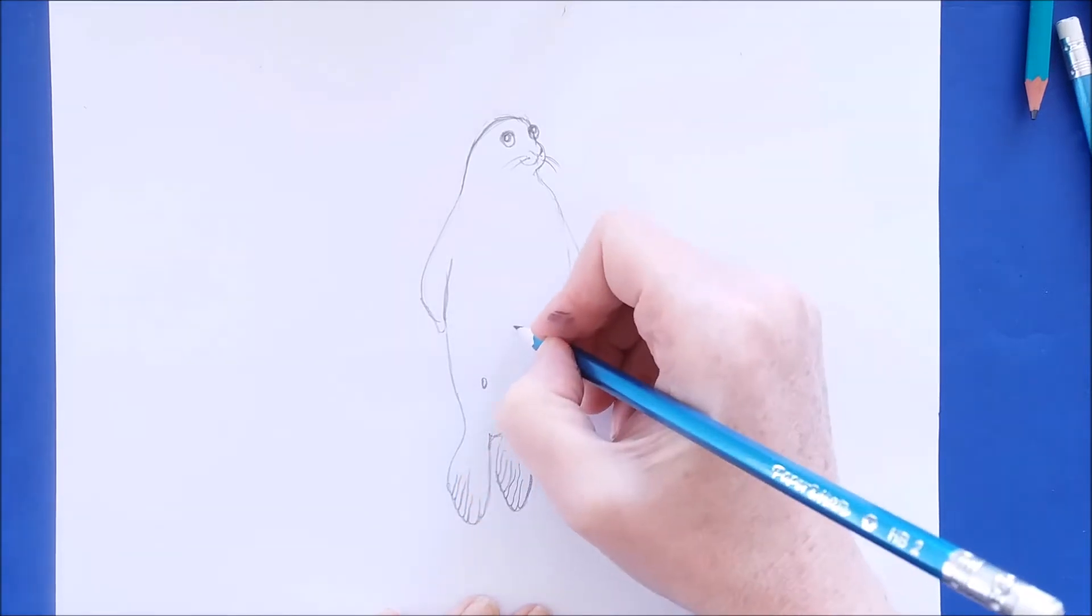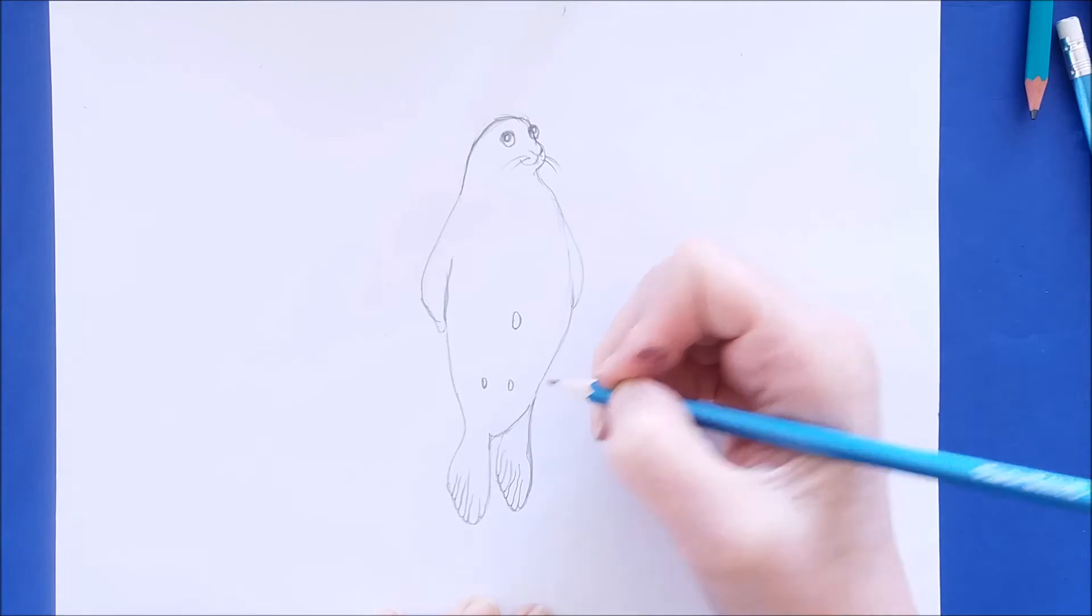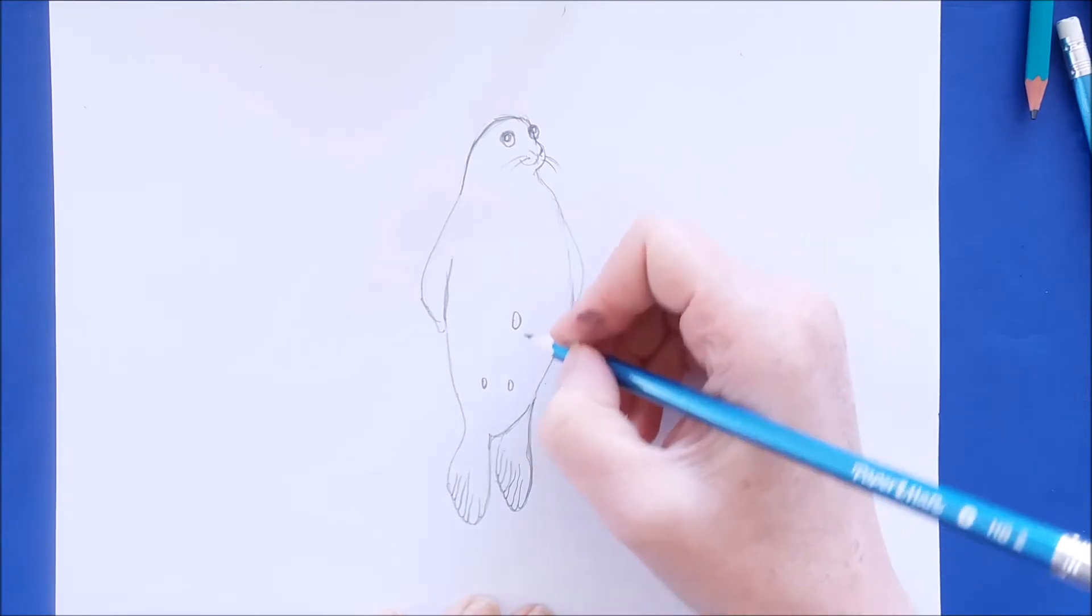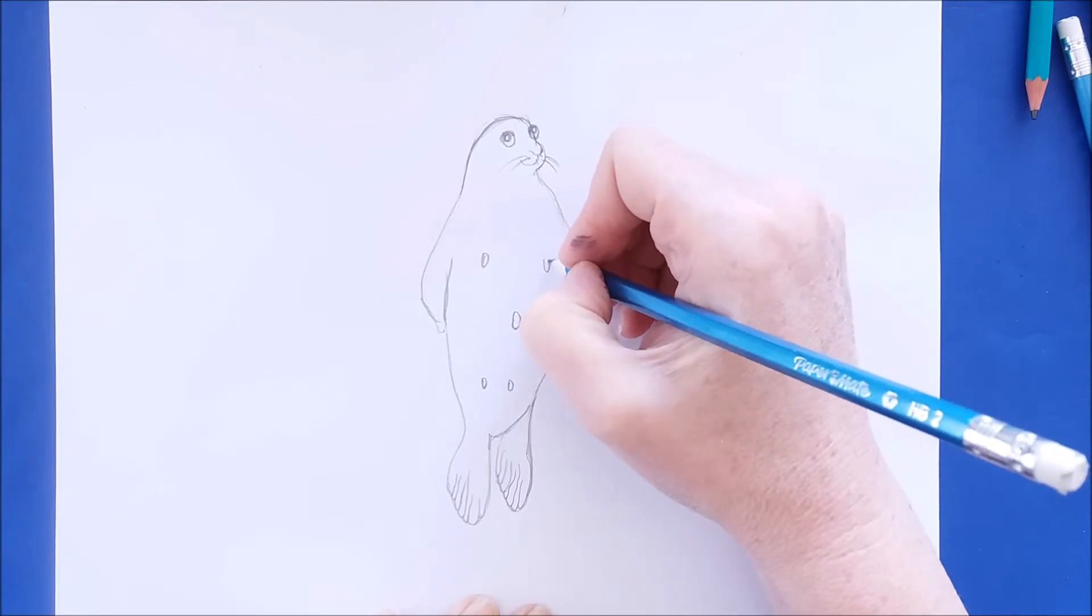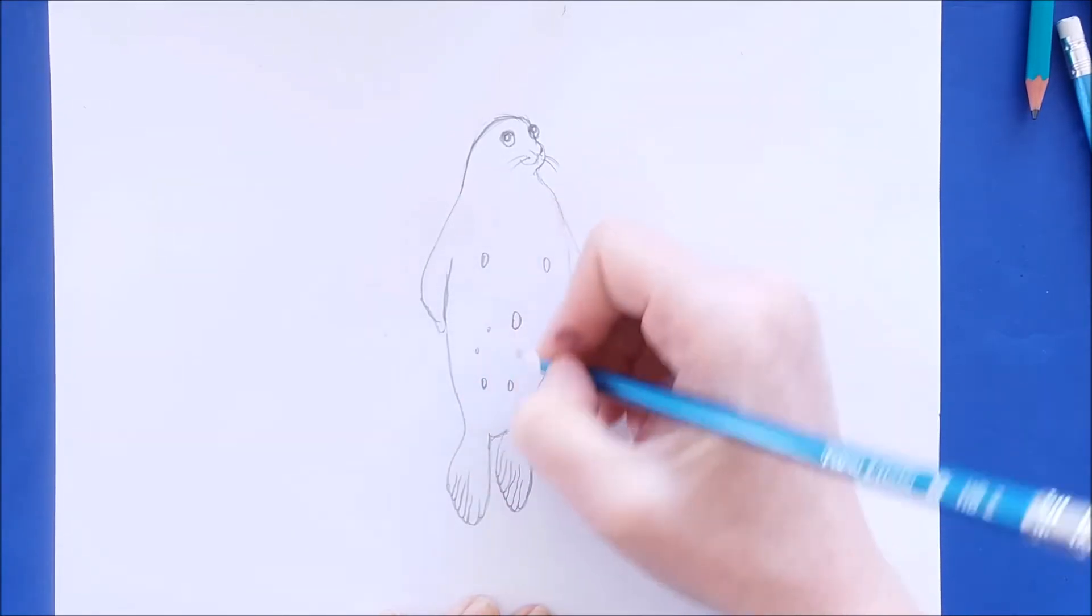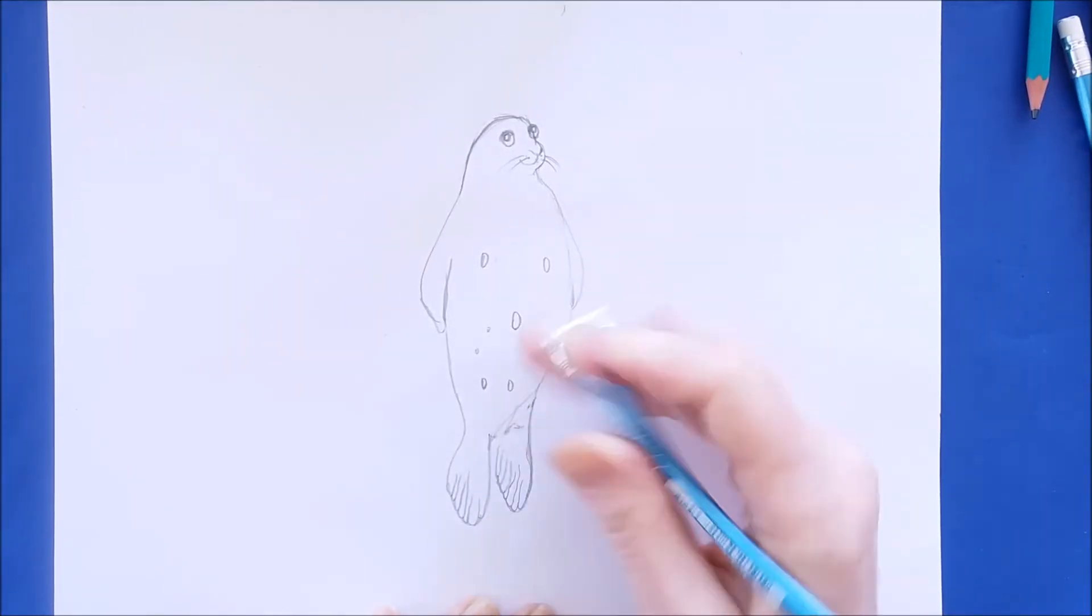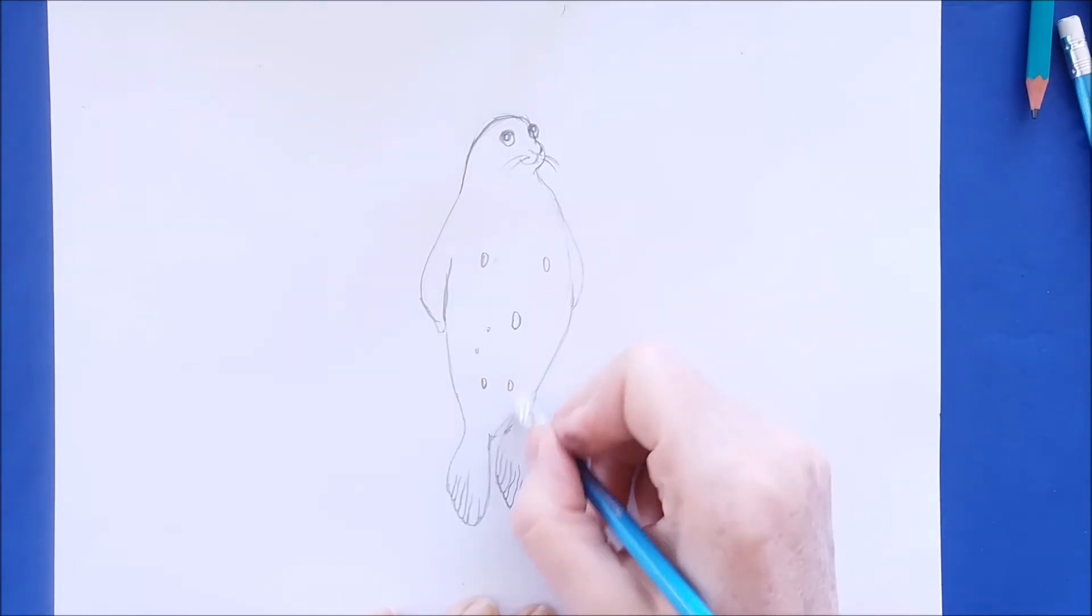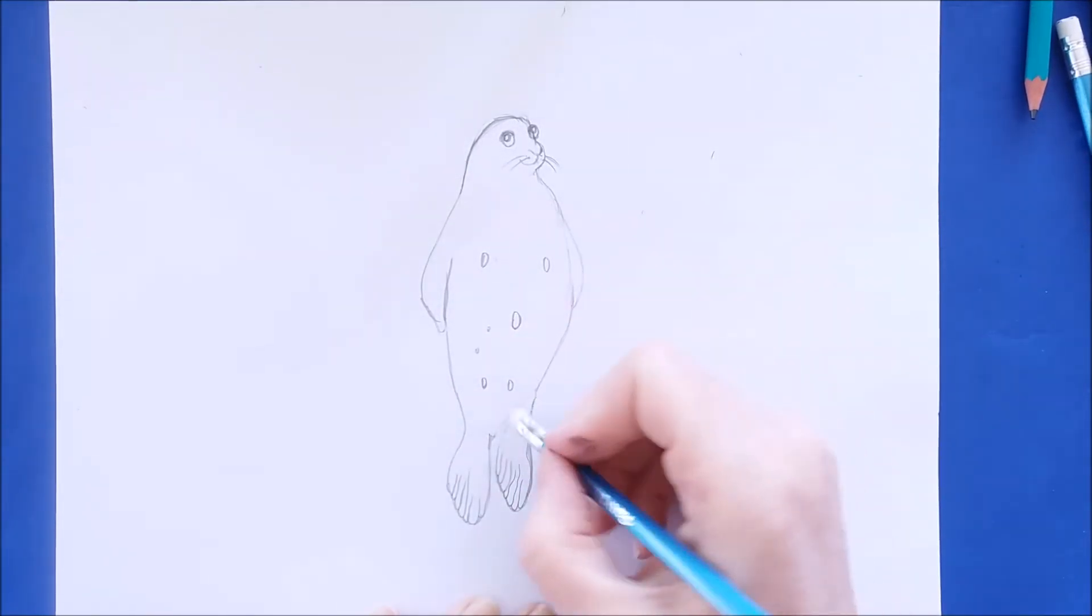And some seals have spots so I'm going to add some random spots throughout the seal's tummy. Some are big and some are small. And then after I've got these spots done I'm going to go ahead and outline this seal and shade him in with a pencil and then he'll be done. And maybe I'll add some seaweed too.